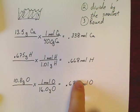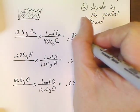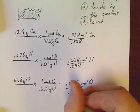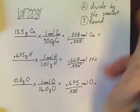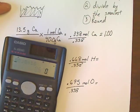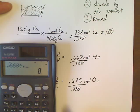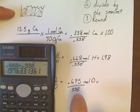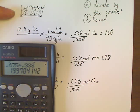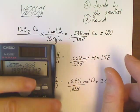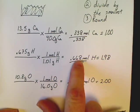Step number two, divide by the smallest number. Look down this list, the smallest number is 0.338. So what I'm going to do now is I'm going to go back and divide every one of these moles by 0.338. The first one is going to be easy. 0.338 divided by 0.338, that one is going to be 1.00. 0.668 divided by 0.338, 1.98. 0.675 divided by 0.338, that's 1.997, which ends up rounding all the way to 2.00.